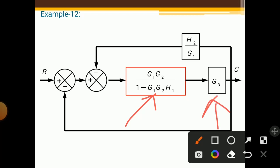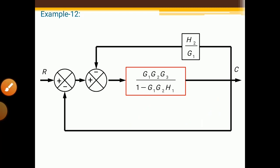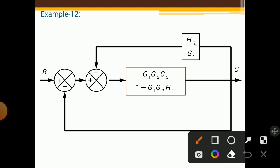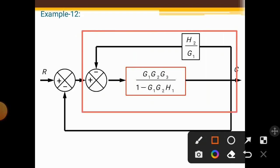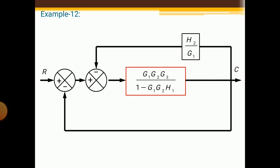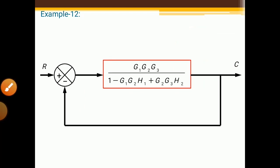Now these two blocks are in series, so we multiply them to get G1G2G3 / (1 − G1G2H1). We then solve the next feedback loop. A negative feedback loop is present, so we use a positive sign in the formula. After solving this feedback loop, we get G1G2G3 / (1 − G1G2H1 + G2G3H2).